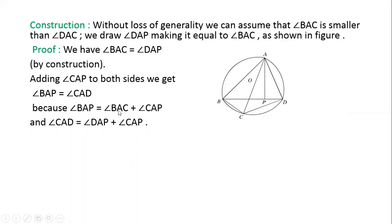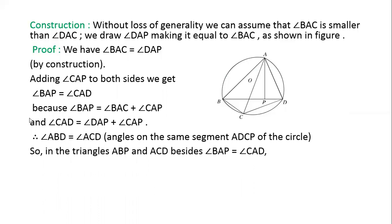Because angle BAP = angle BAC + angle CAP, and angle CAD = angle DAP + angle CAP. So angle ABD equals angle ACD — angles on the same segment ADCP of the circle.